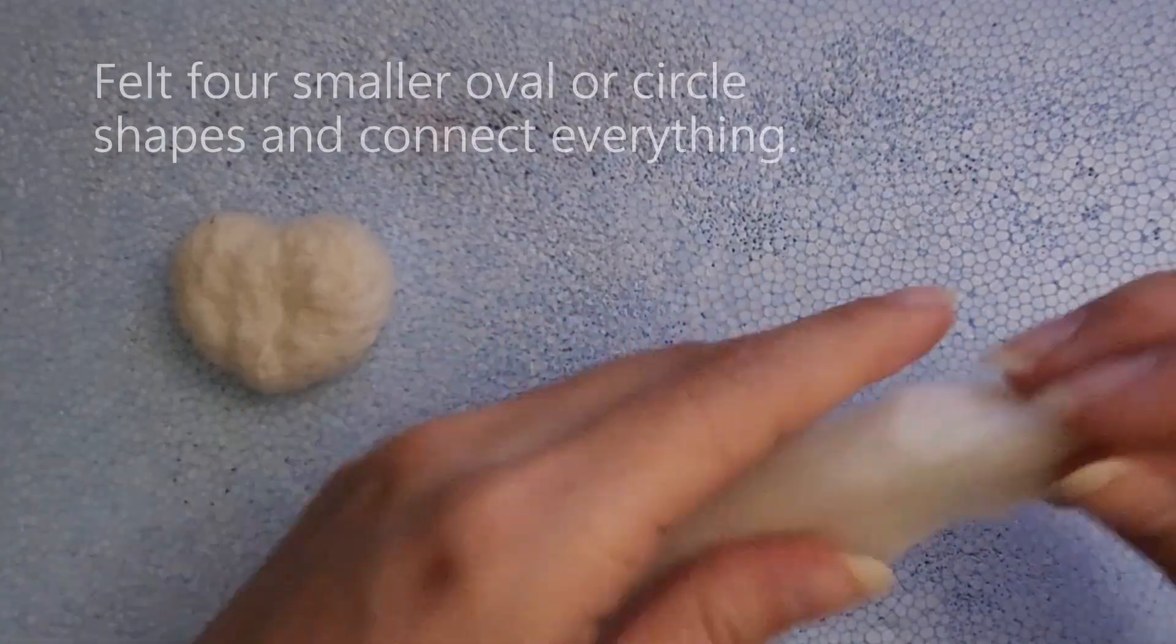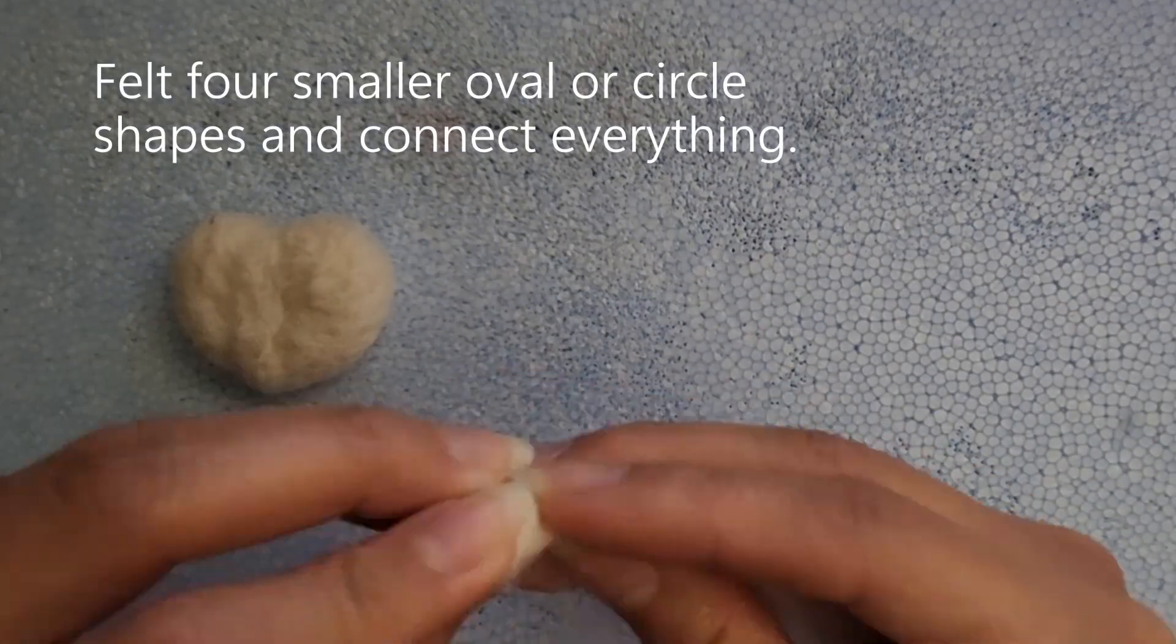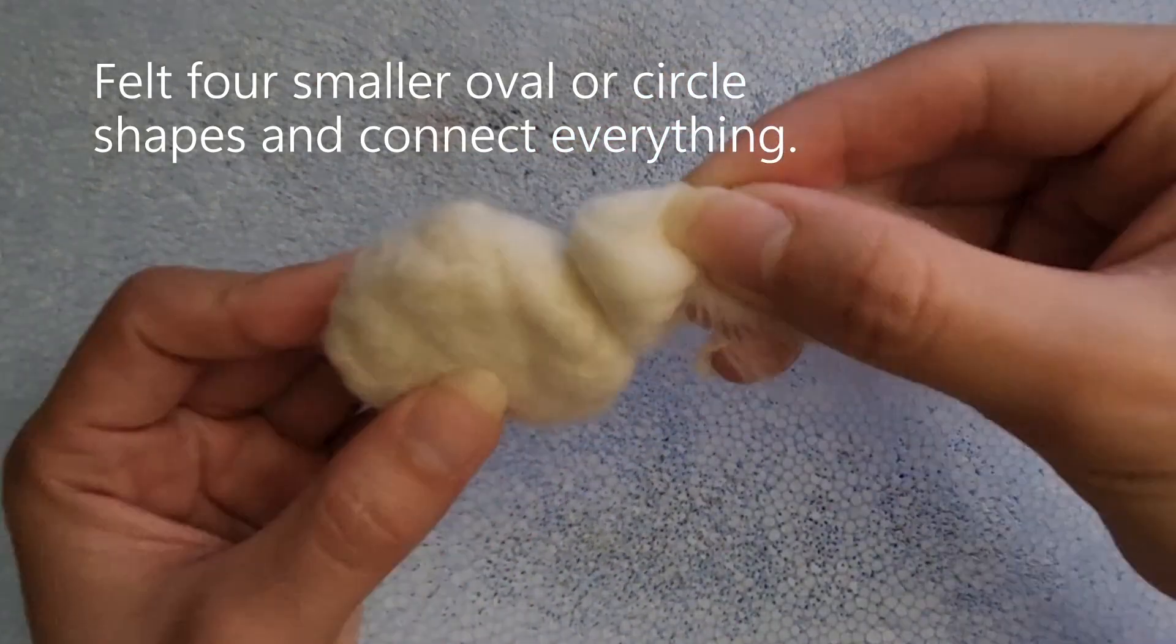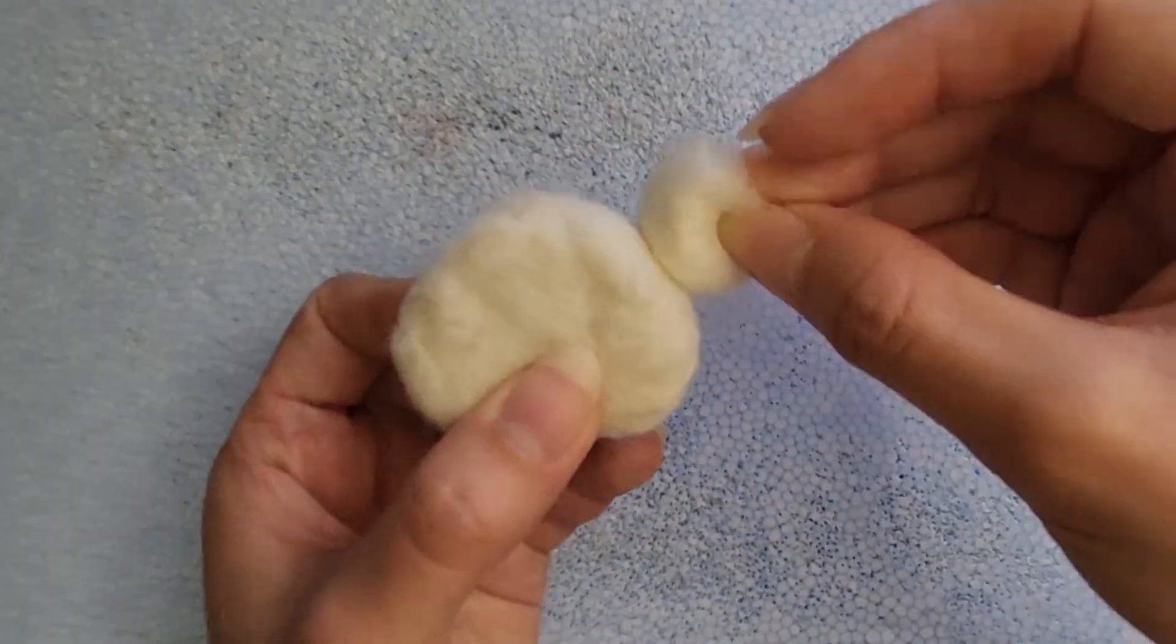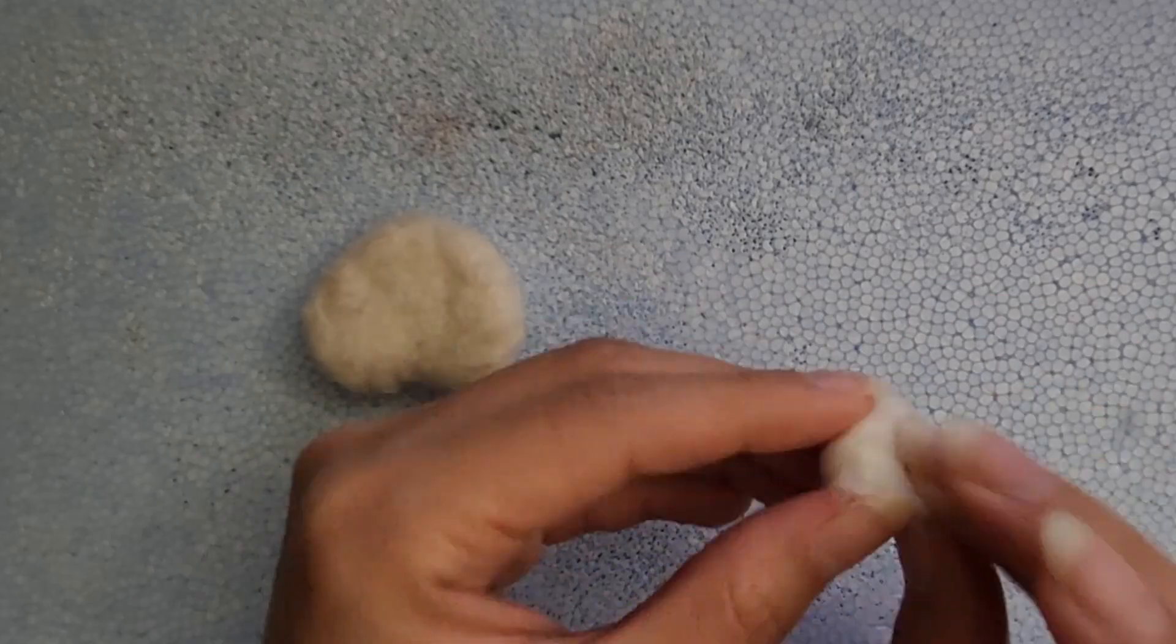For this step, you want to felt four smaller oval or circle shapes and connect everything to make it look like a cat's paw. Don't worry about the paw looking smooth because we will be going over the cracks or bumps that you may have in the next step.